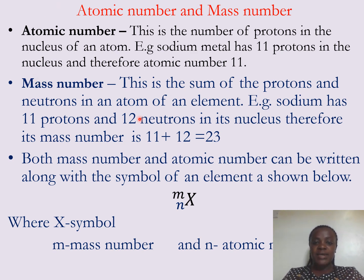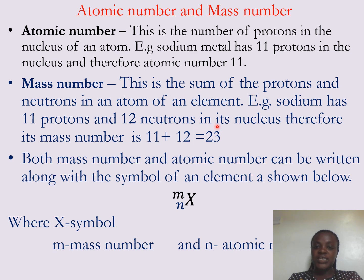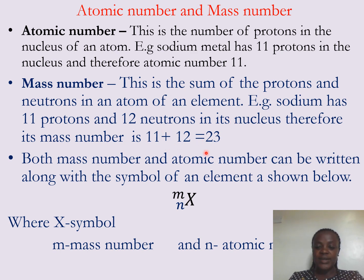The mass number is the sum of the protons and neutrons in an atom of an element. For example, sodium has 11 protons and 12 neutrons in its nucleus. Therefore its mass number is 11 plus 12, which gives us 23. The mass number of sodium is 23.